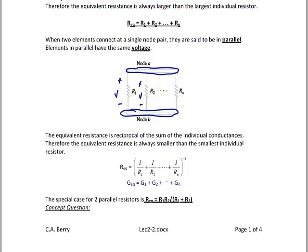The equivalent resistance for parallel resistors is the reciprocal of the sum of the individual conductances. Therefore, the equivalent resistance is always smaller than the smallest individual resistance. Many times in this course you will see me use the special case for finding equivalent resistance for parallel resistors, which is the product over the sum.